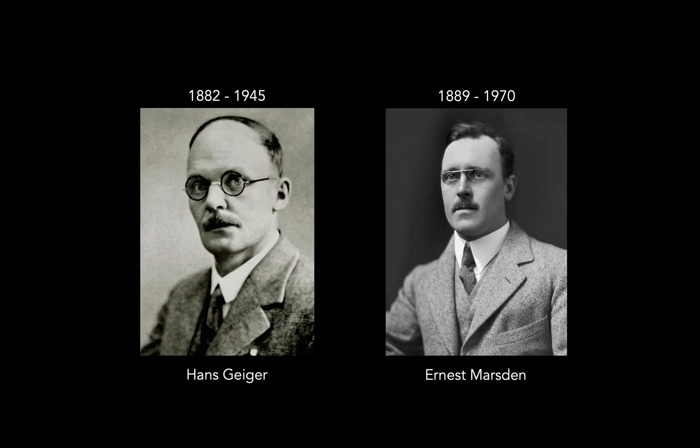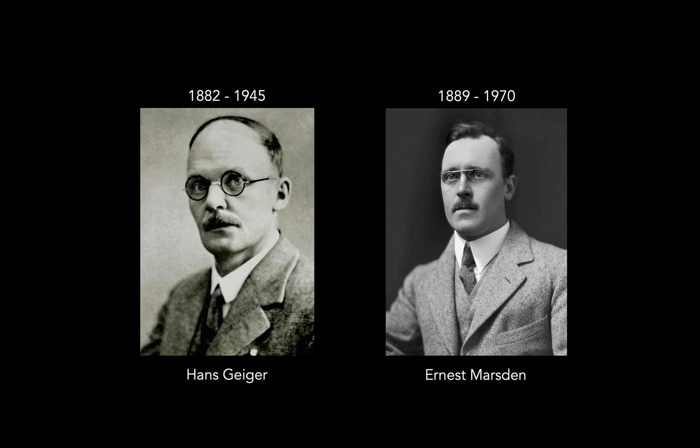So naturally, he set up an experiment to test how alpha particles are deflected by matter, and for this he enlisted Hans Geiger, as well as one of Geiger's undergraduate students, Ernst Marsden. So together, they set up an experiment which essentially involved bombarding a piece of gold foil with these alpha particles, and then detecting their final positions using a fluorescent screen.